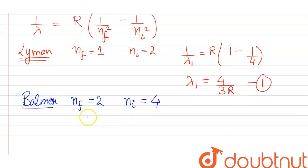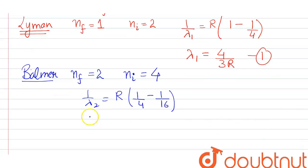On putting the value we get 1/λ₂ = R(1/4 - 1/16). On further solving we get 1/λ₂ = R, taking LCM...